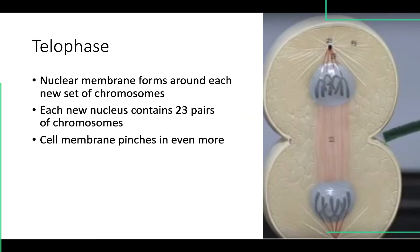The last phase of mitosis is telophase. The 46 pairs of chromatids were pulled apart — 23 pairs went to one end and 23 pairs went to the other. A nuclear membrane starts to form around each group of 23 pairs, so now we have a cell with two nuclei, each with 23 pairs of chromosomes. The chromatids are now called daughter chromosomes. Each pair of centrioles is close to its respective nucleus, and we see the cell membrane invaginating even more. That's telophase.